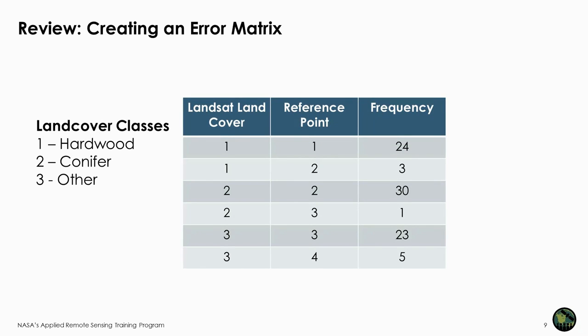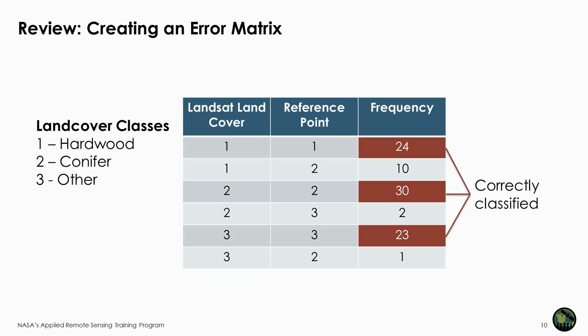We will review creating the error matrix. Your unbiased reference points are overlaid onto your land cover map using GIS software, which allows you to create a table where the frequency of pixels of each combination of land cover pixels and reference points are identified. In this example, 24 pixels are correctly classified as hardwood, 30 pixels as conifer, and 23 pixels as other. The other pixels represent errors in the classification.